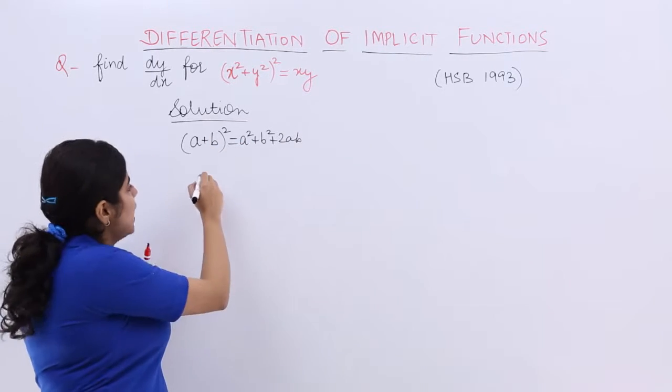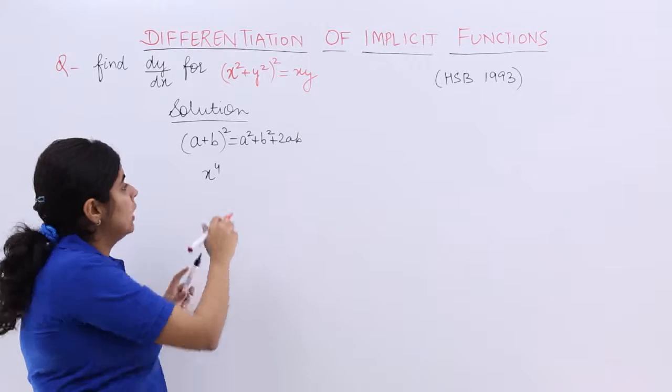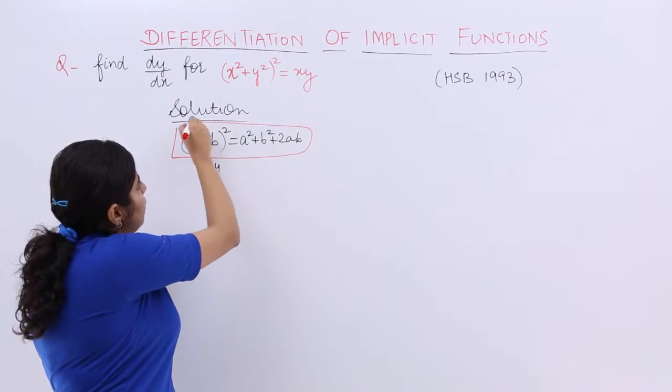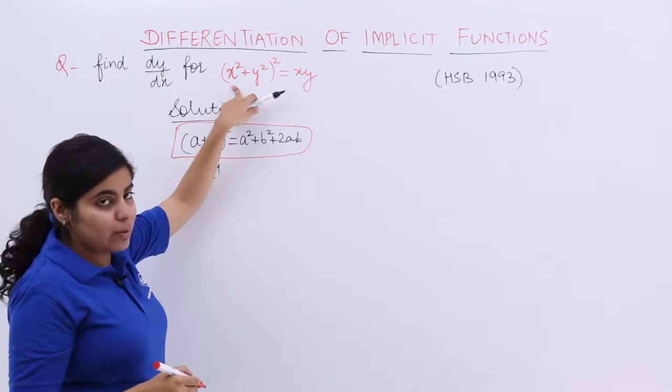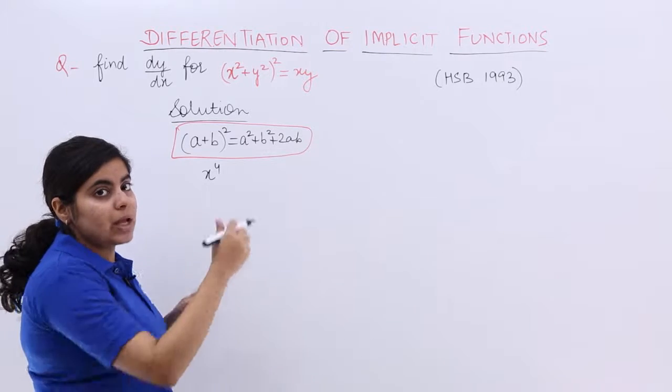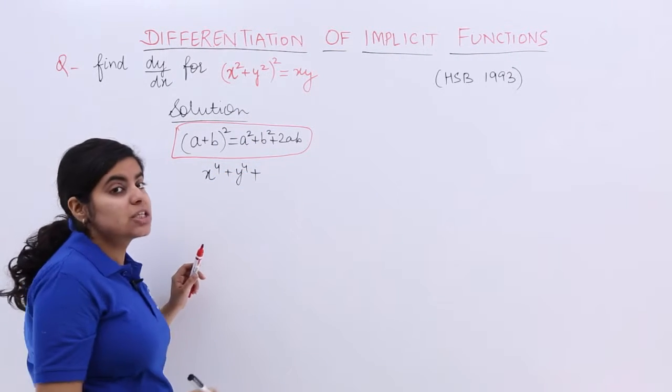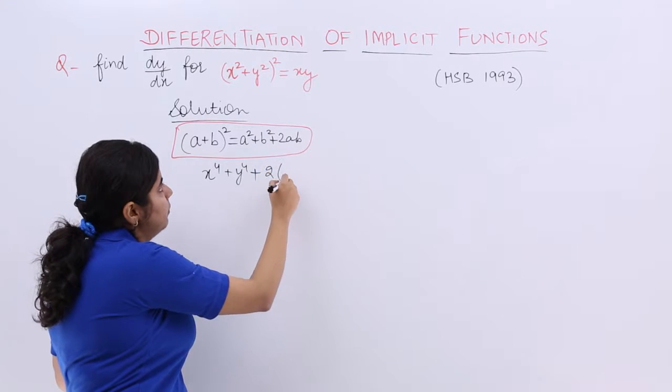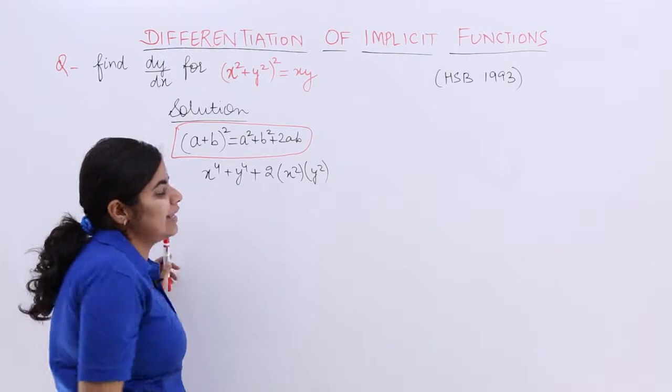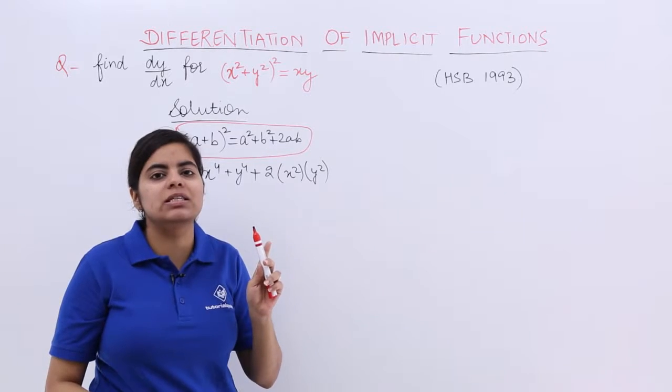So it becomes x raised to the power 4. Let me write it in the big box. a² means x⁴ plus b², that means y⁴ plus 2ab. 2 multiply by a multiply by b. You see that a means the first term which is x². b means the second term.